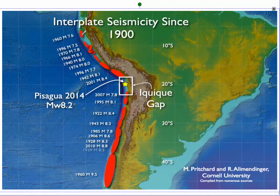We can also look at earthquakes — these are all major earthquakes that have happened since 1900. They're pretty significant: 8.4 magnitude, 8.1, 7.8, 8.6 magnitude, and 9.5 magnitude. These are some incredibly powerful earthquakes all occurring right along this subduction zone.